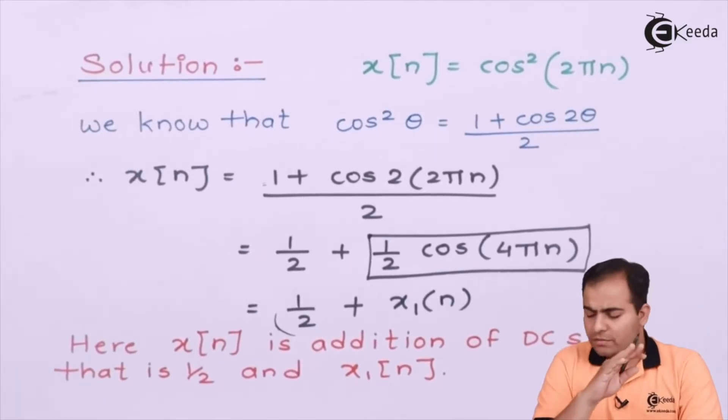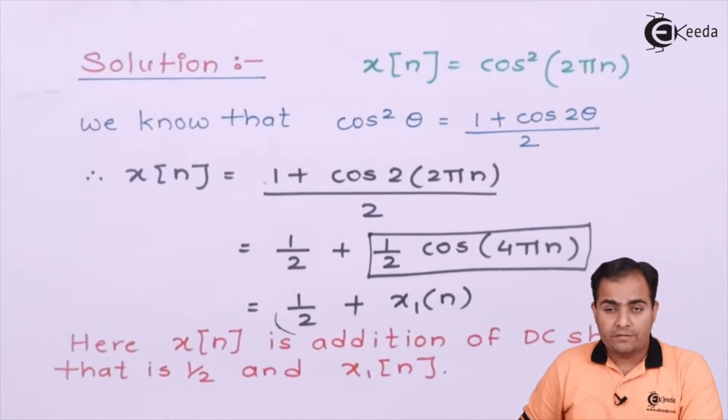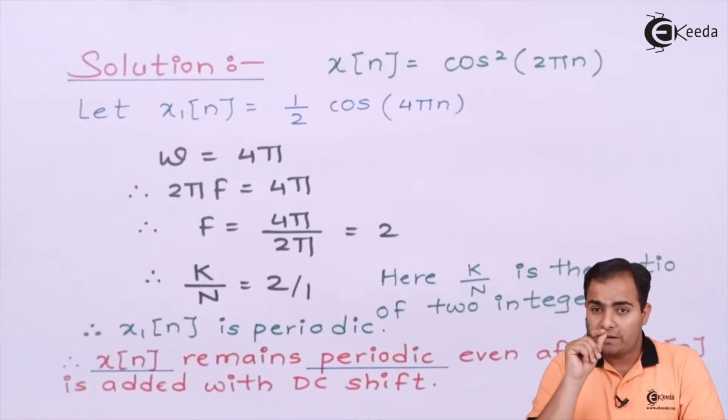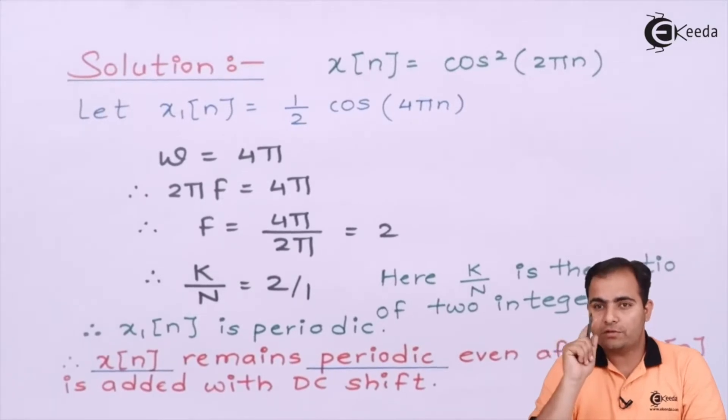It will follow the same sequence after adding a DC shift. So half doesn't matter at all, but what about x[n]? Whether x[n] is periodic or not, we'll see. We will see the periodicity of x₁[n] because total x[n] completely depends on x₁[n]. DC shift will not affect the periodicity or non-periodicity.